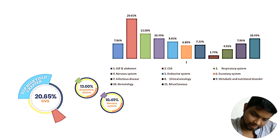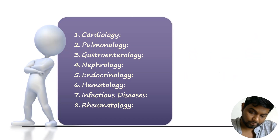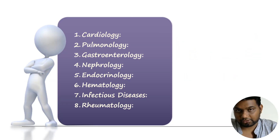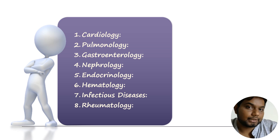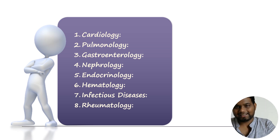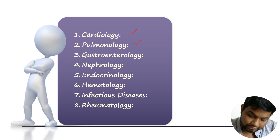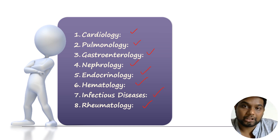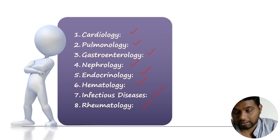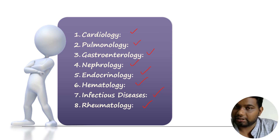DMA has devised a strategy for your internal medicine — how to approach it. We divide it into eight sections: what are the diseases you have to cover in these eight sections, so that you can master internal medicine in a very easy format. The eight sections are cardiology, pulmonology, gastroenterology, nephrology, endocrinology, hematology, infectious diseases, and rheumatology. Cover the bare minimum diseases in these sections and your internal medicine is taken care of.